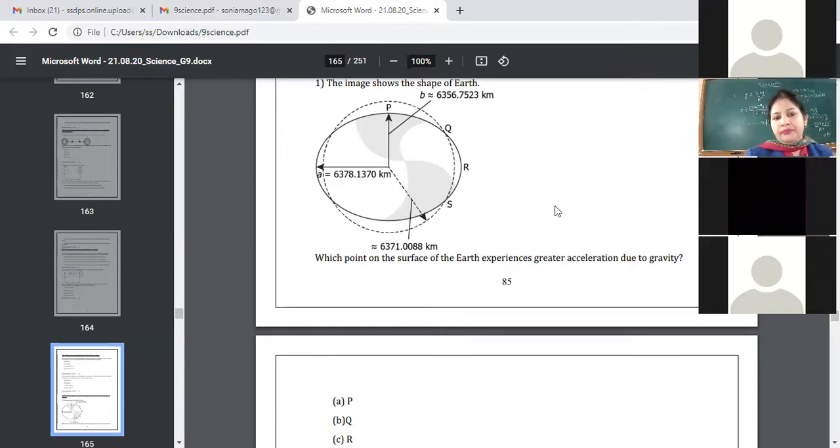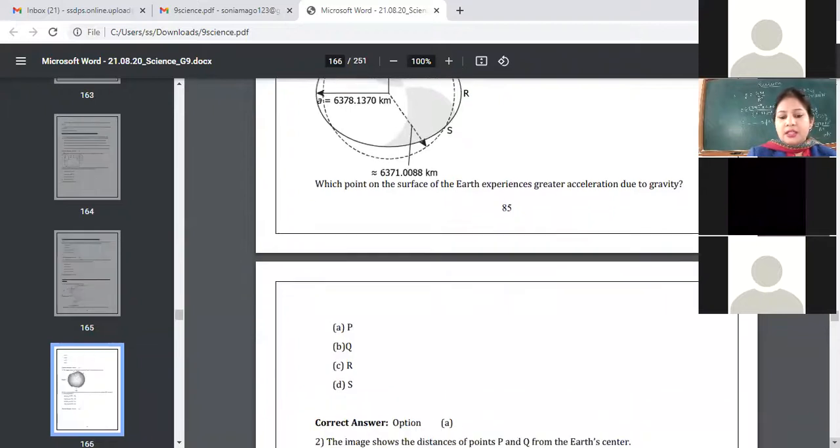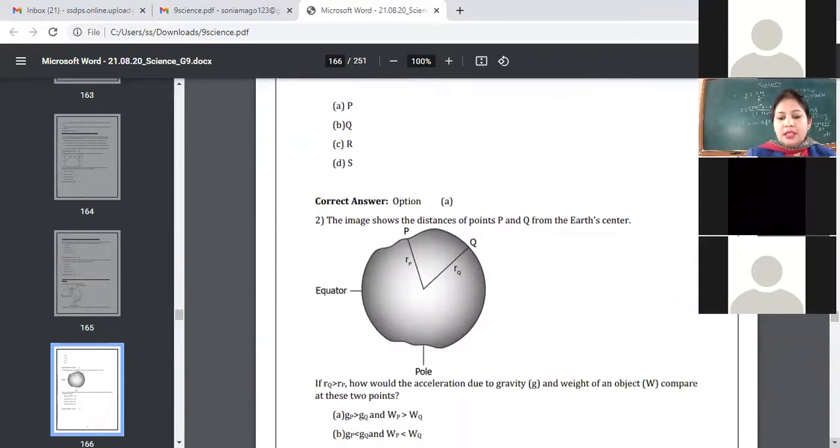This is P now. Okay, P is a point on the poles. And we know that acceleration due to gravity at the poles is much greater than that at the equator of Earth. All right, so the answer is P. Let us see the next one.